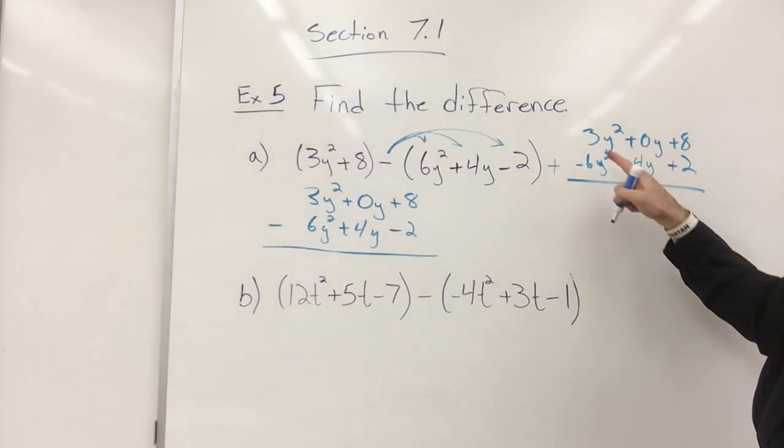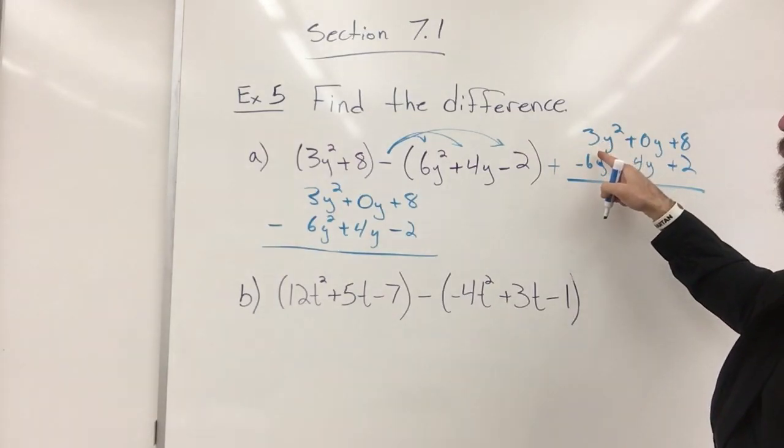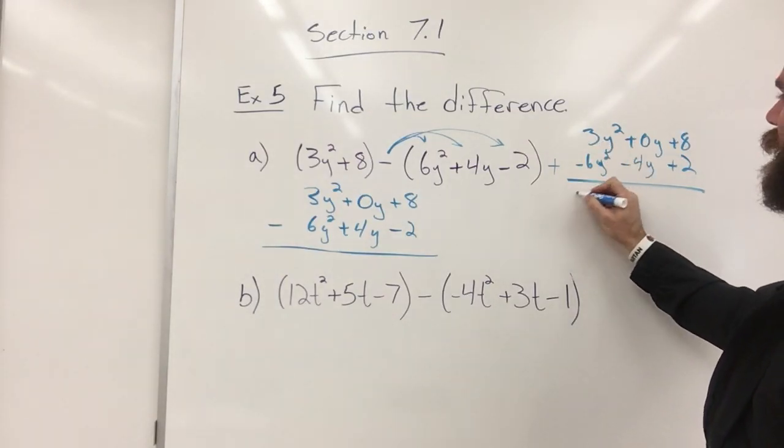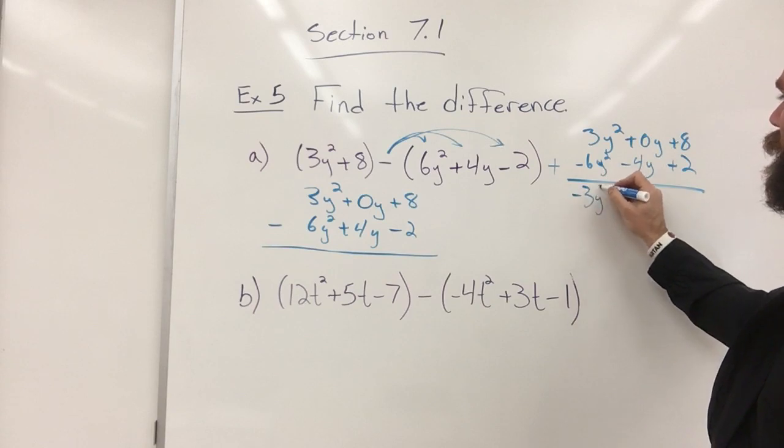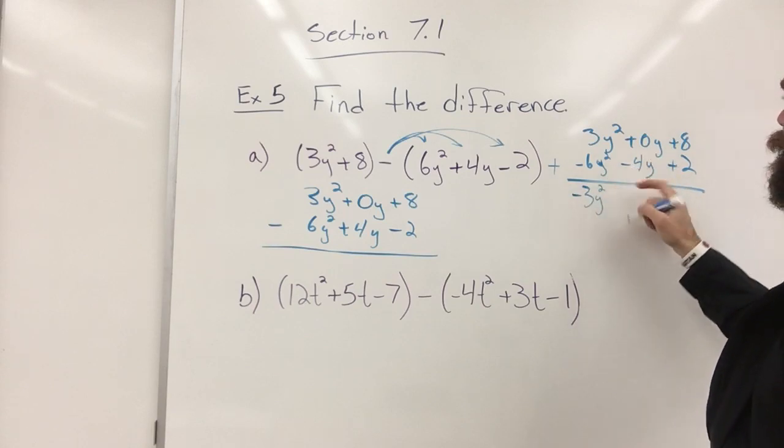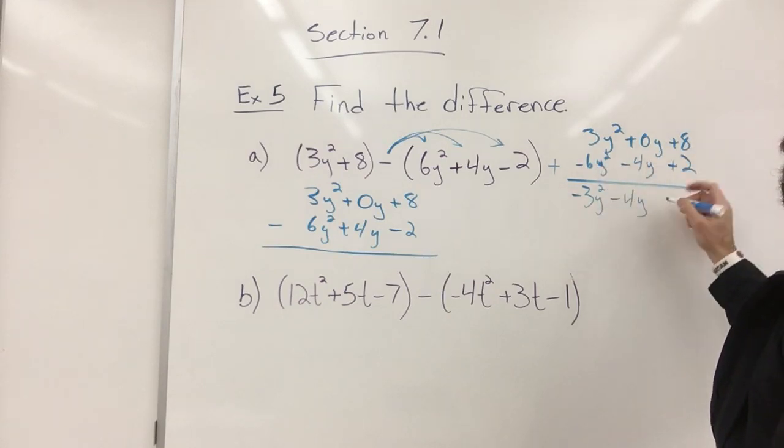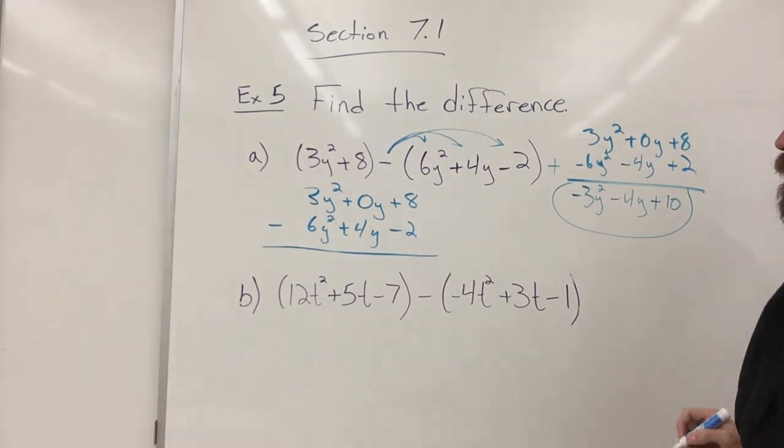So 3 and a minus 6 is a negative 3y squared, 0 minus a 4 here is minus a 4y, 8 positive 2 and that's a 10. So there's my polynomial there.